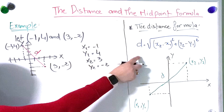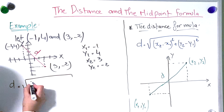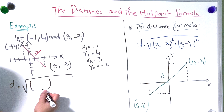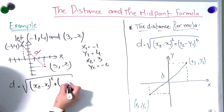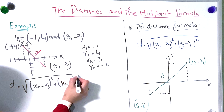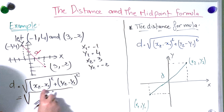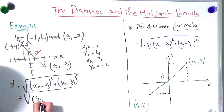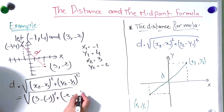Now I'm going to take the numbers and plug them into the formula. We have d equal to the square root of (x2 − x1) squared plus (y2 − y1) squared. Plugging in: x2 is 3 minus x1 which is −1, plus y2 which is −2 minus y1 which is 4.